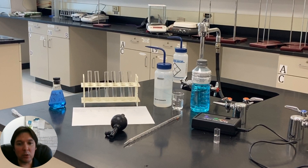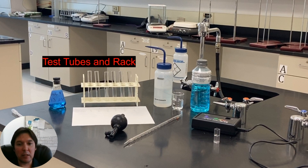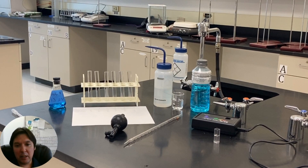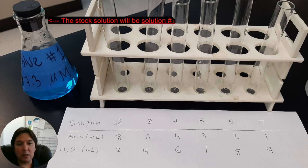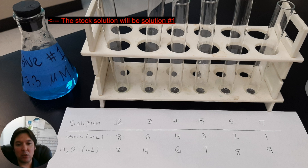We're going to make some solutions in those test tubes on the rack. We have our stock solution of blue dye number one on the left, and then in each of the test tubes we'll have solutions two through seven. As you go to the right down this test tube rack, you're going to decrease the amount of stock that goes into each one and increase the amount of water, so the solutions on the right will be more dilute.